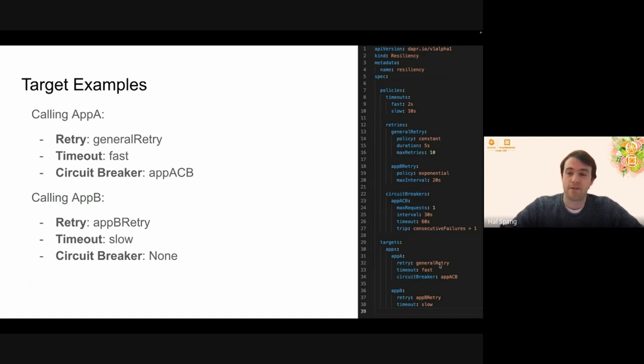You can see that app A references the general retry, which is this retry policy right here. And then it references timeout fast. So requests here timeout after two seconds going into app A and then it also uses app A's circuit breaker. App B, however, uses app B's retry. So it's going to retry forever. Calling into app B is going to retry forever. And then we have also the timeout slow. So a 10 second timeout because maybe we know that the application has longer running systems or functions or whatever. But we know it's going to take a bit longer and we want it to retry longer. So these two apps have their own policies defined, but it's all on the same thing. It's all very short and succinct right here.